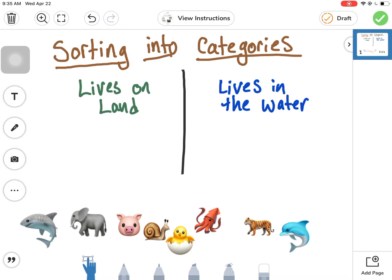We're going to sort these different animals into two categories: lives on land and lives in the water.